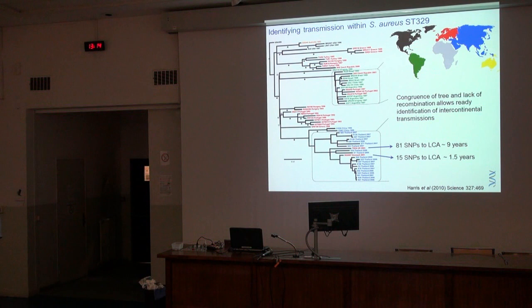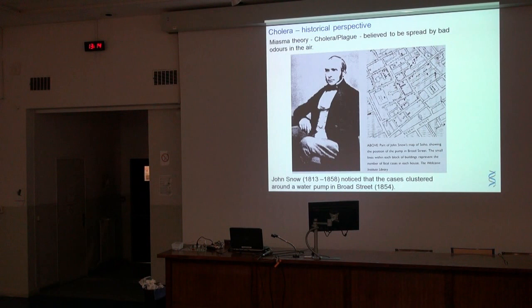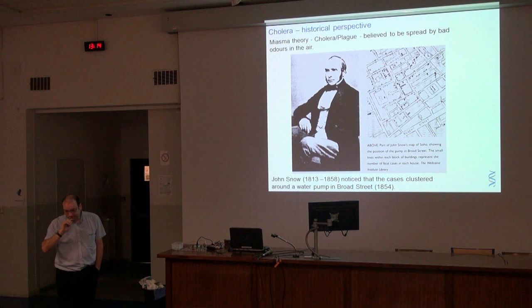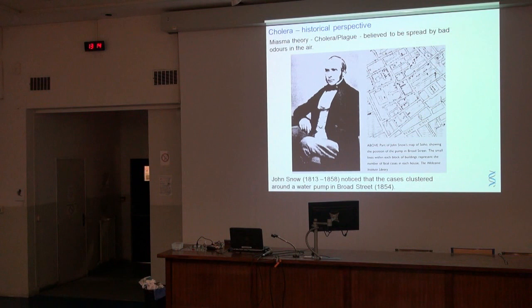It's knowing which of the changes are random — building an accurate clock — that allows us to date transmission. We can date the introduction of a strain into England to within at least the last nine years from Southeast Asia. That will become important later.